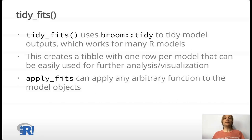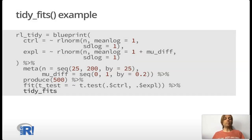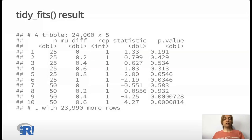Finally, we use tidy fits to tidy the model outputs using broom. This works for many R models and creates a tibble with one row per model that we can easily use for further analysis and visualization. And we can use apply fits to apply any arbitrary function to the model objects if tidy is not exactly what we want for our particular case, or it doesn't support the model that we're using. Then we just invoke that function, and again, that gets us to the same tidy data set that I showed earlier in the presentation.